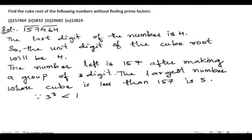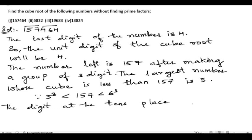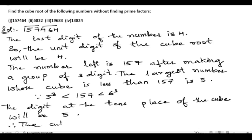Since 5 cube is 125, which is less than 157, and 157 is less than 6 cube, the digit at the tens place of the cube root will be 5. Therefore, the cube root of 157464 is 54.